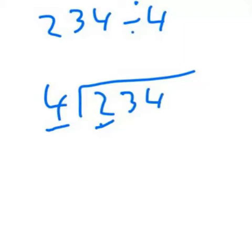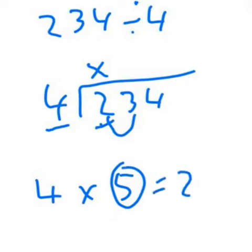So 4 into 2, it won't fit, so we'll put an X. 4 into 23. So I know that 4 times 5 is 20. And if we added another 4 to that, it's 24, it's too big. So the number that we put on top of here is 5.